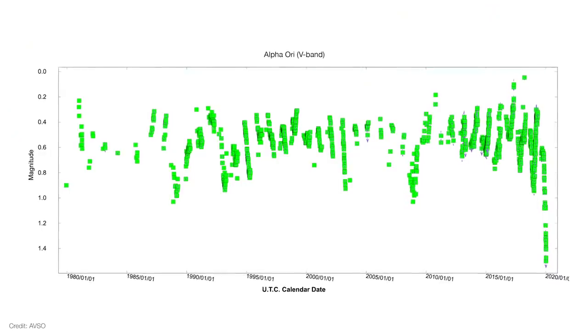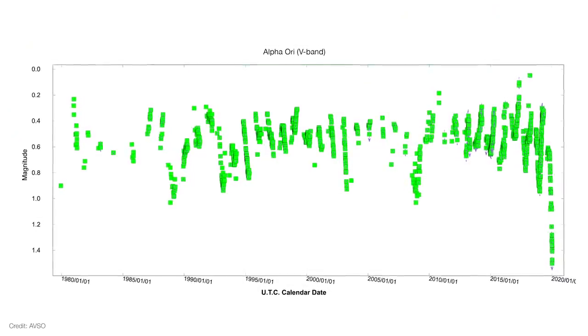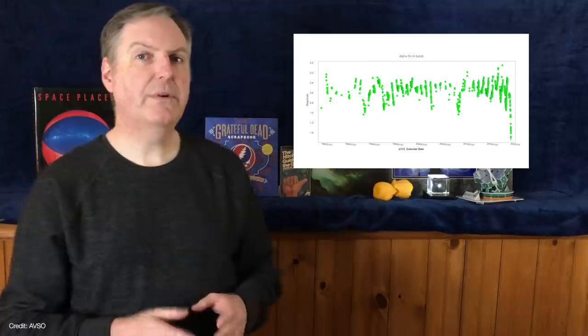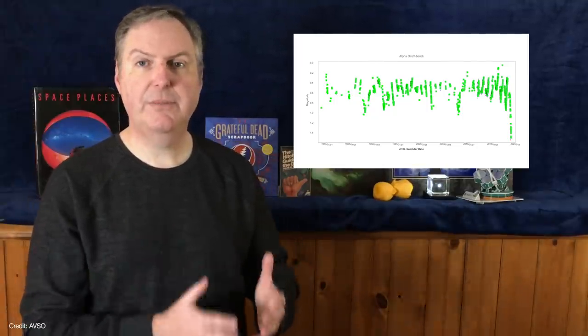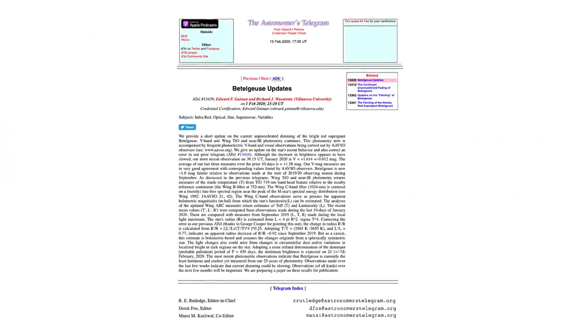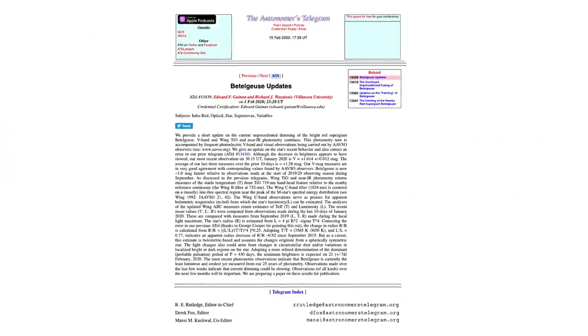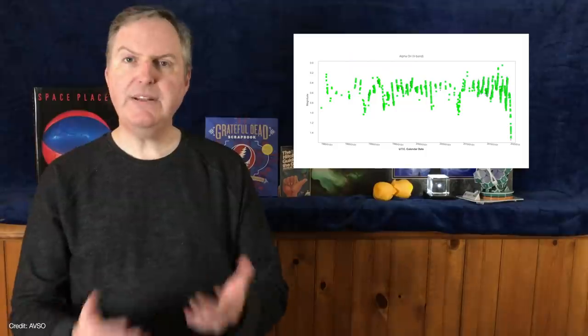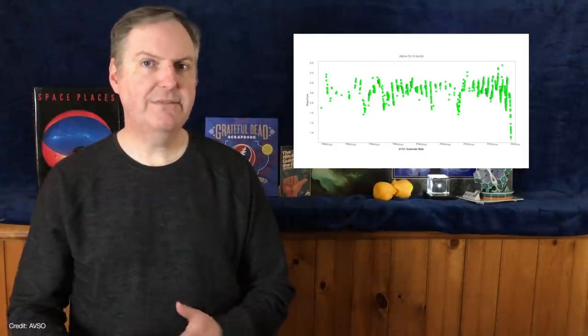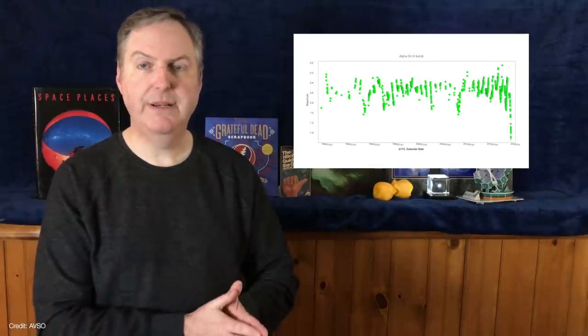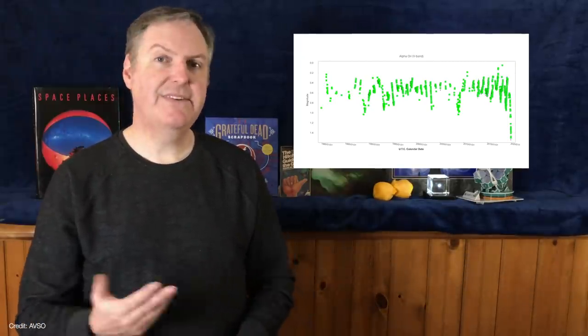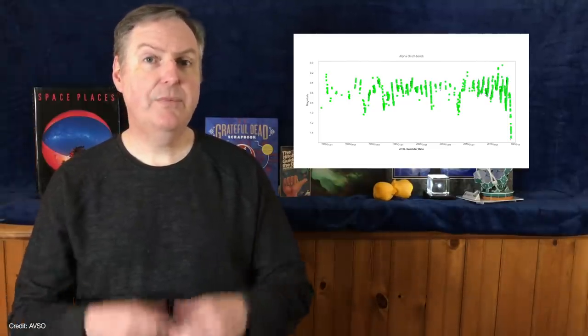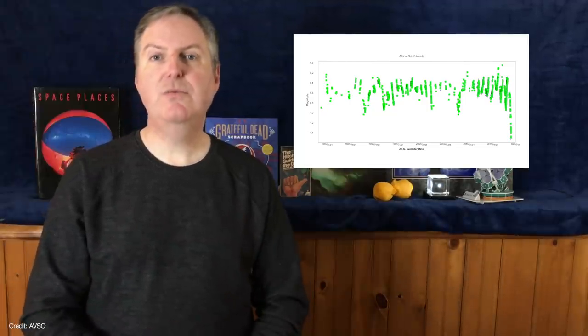However, Ed Geinen of Villanova University and Rick Wasatonic have been monitoring Betelgeuse for the last 40 years using photometry. They were among the first to report on Betelgeuse's fading in a pair of astronomical telegrams in December. In a follow-up telegram on February 1st, Geinen reports that Betelgeuse has continued to fade since the December image was taken. Betelgeuse's nominal magnitude is around 0.5 in the middle of the visible part of the spectrum. We call this the V-band. By the end of December, it had fallen to about magnitude 1.5.